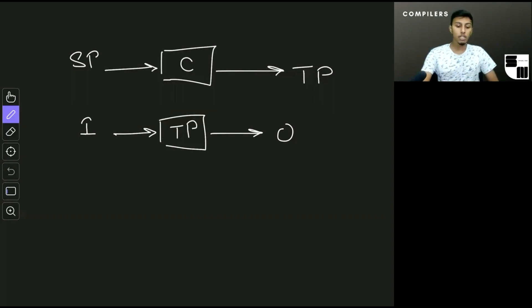However, here is how an interpreter works. So I have an interpreter here. Now what an interpreter takes as input is two things. One is the source program. The second is the input. And what the interpreter does is it directly gives us the output here. So it takes both the source program and the input at the same time.